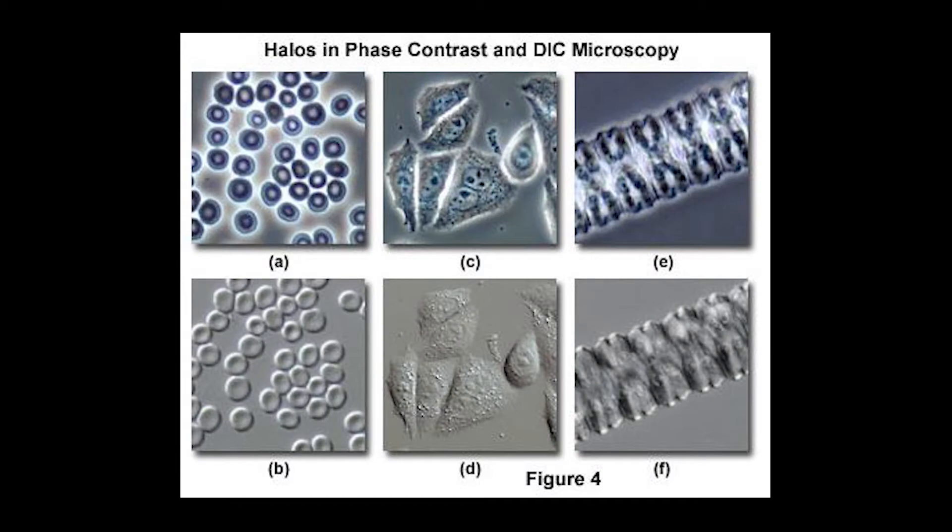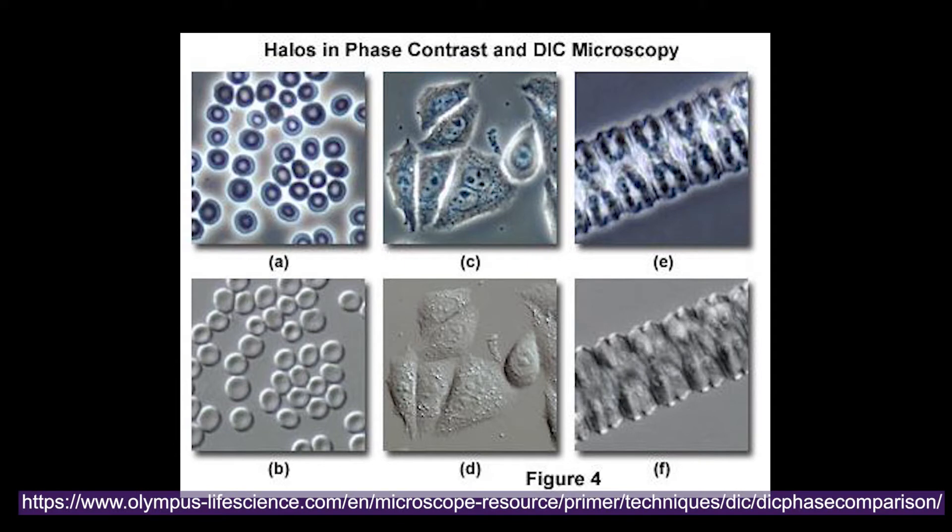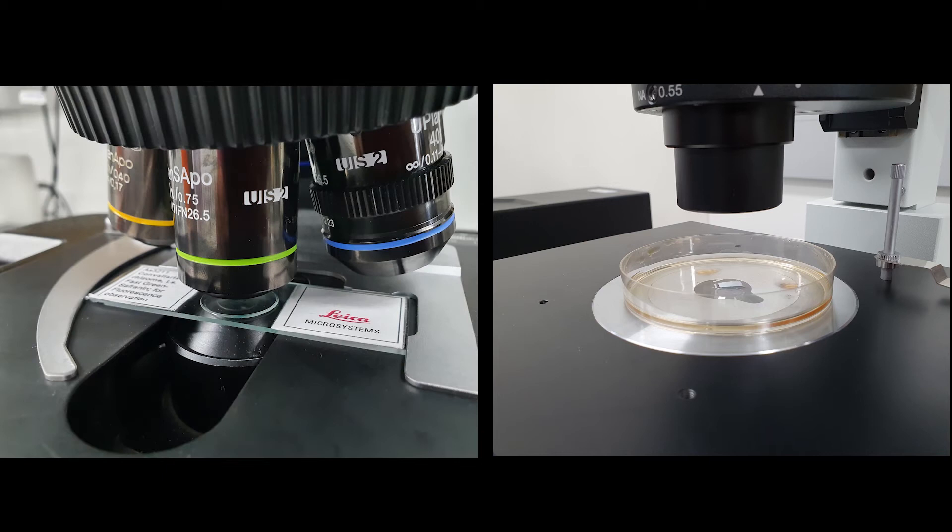DIC generally provides a higher resolution image with less halo artifacts and a pseudo three-dimensional appearance. It is optimized for cover slips and importantly it cannot be used with plastic dishes.